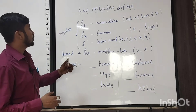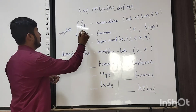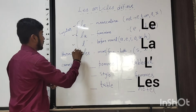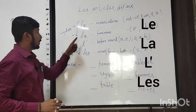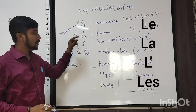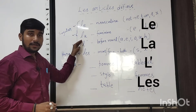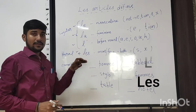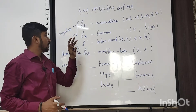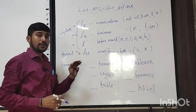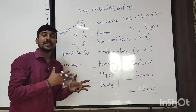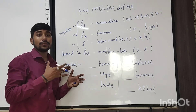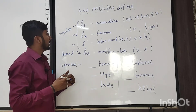Here we have four definite articles in French: le, la, l'apostrophe, and les. All four are used in different ways according to gender.